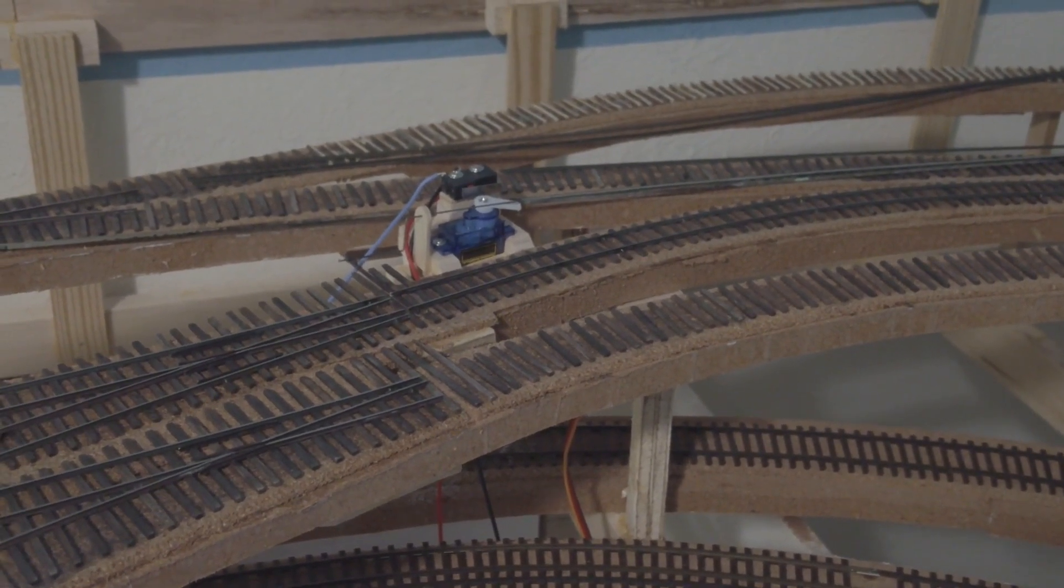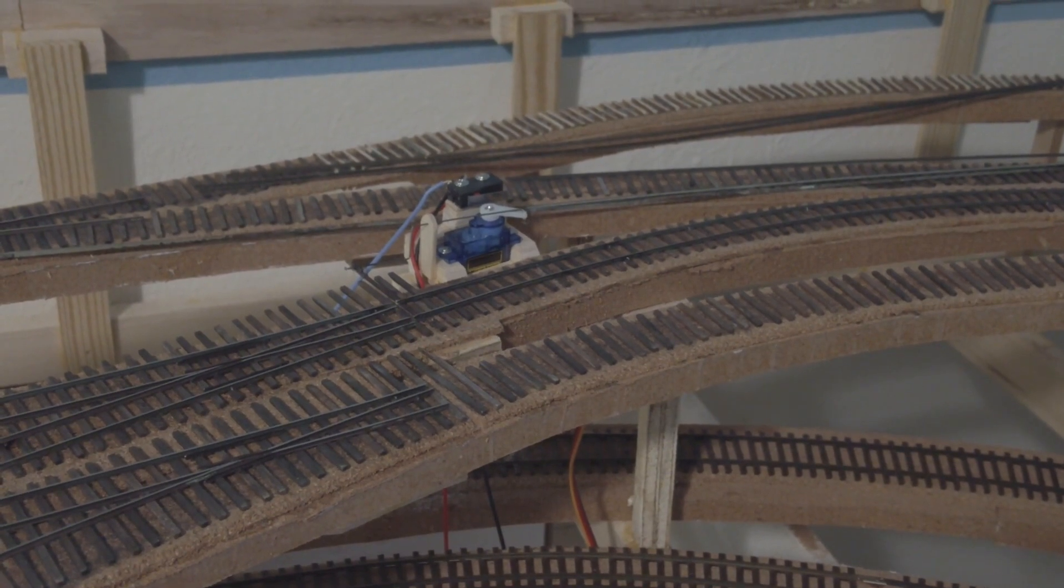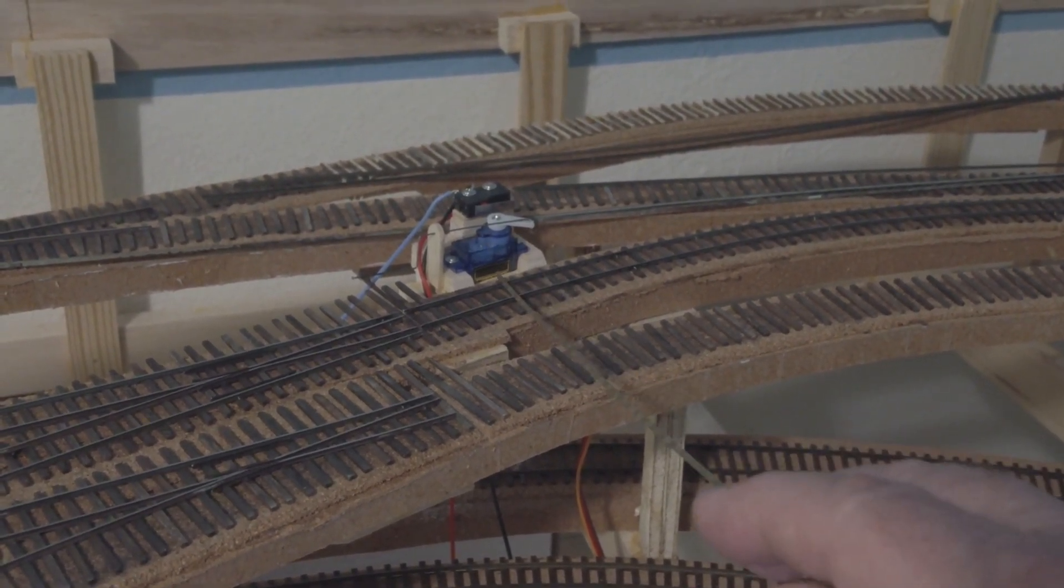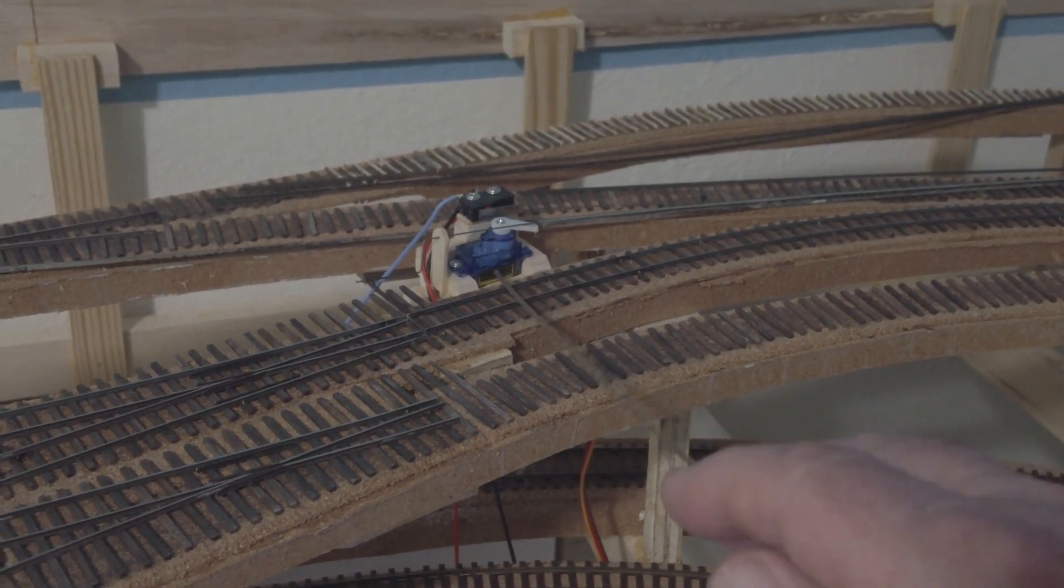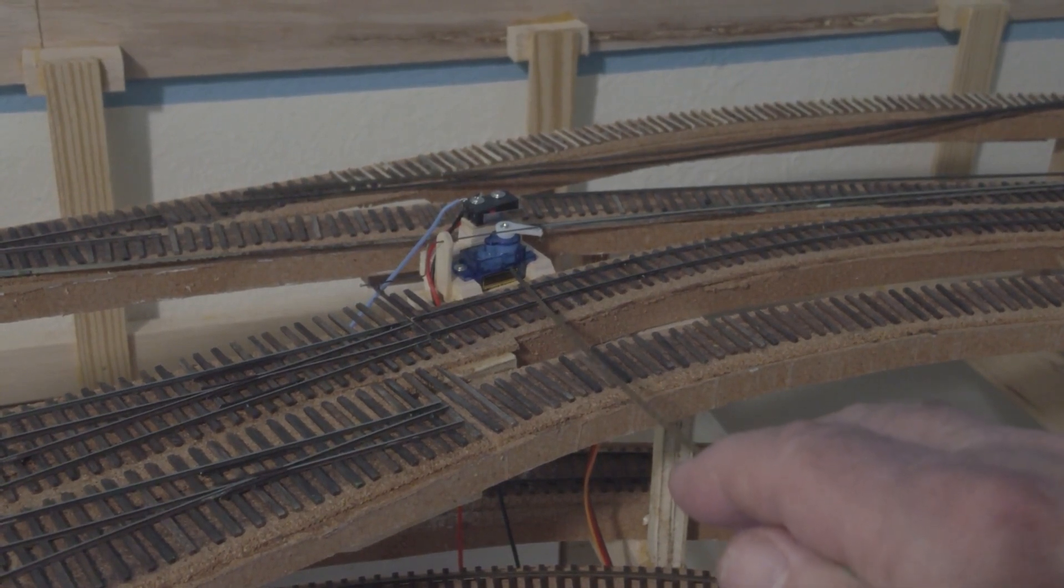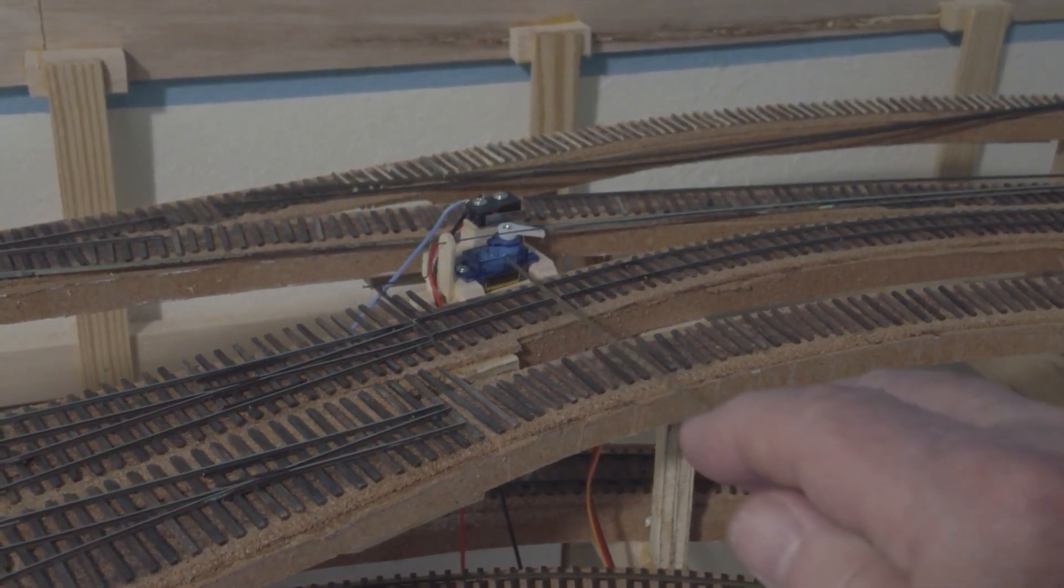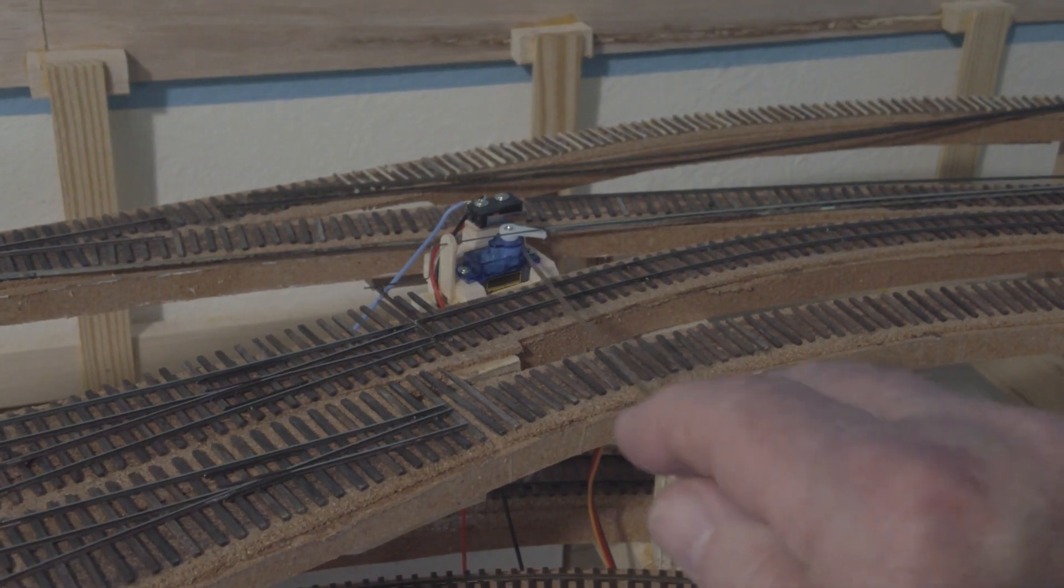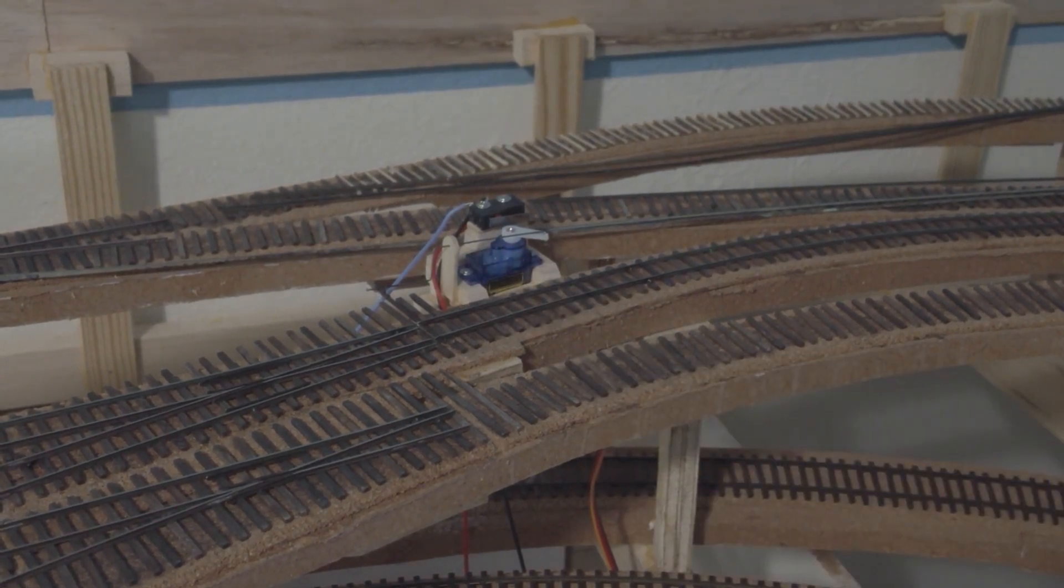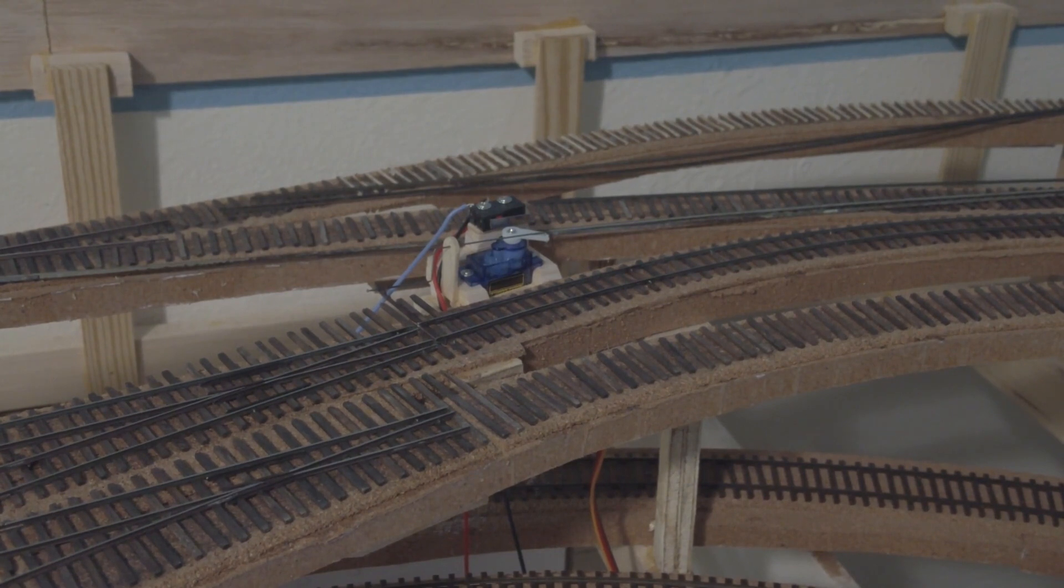In order to clear everything underneath, this switch had to be controlled by a servo mounted up above the level of the NMRA gauge. So it's a rather tricky configuration. It took quite a while to figure that all out.